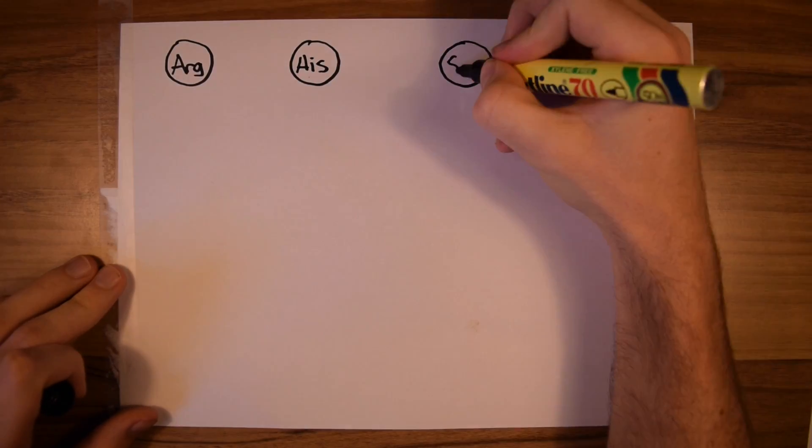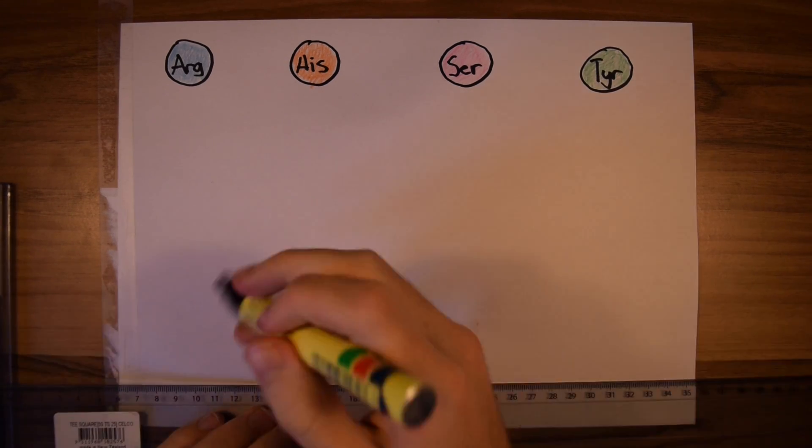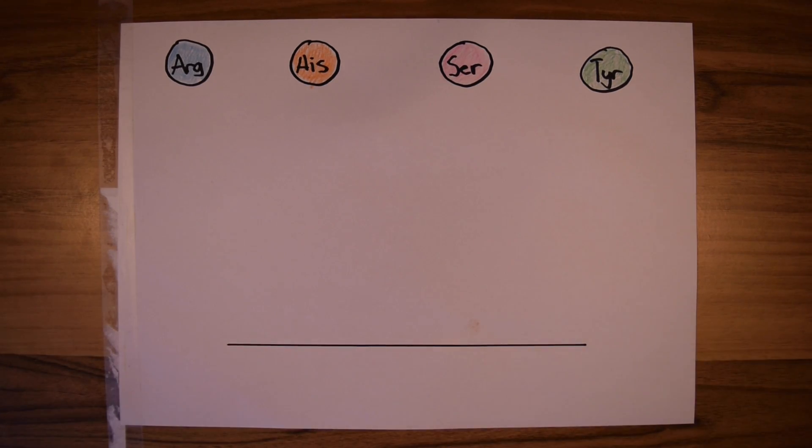Proteins within our body are made up of small chains of building blocks called amino acids. Here I've drawn four randomly selected amino acids: arginine, histidine, serine, and tyrosine.